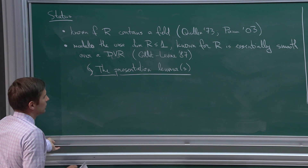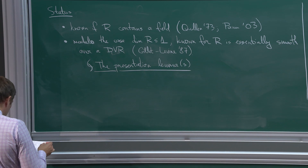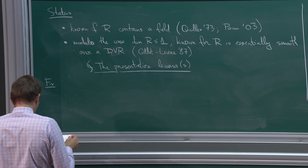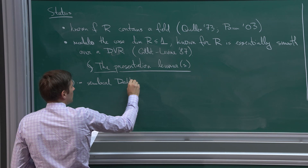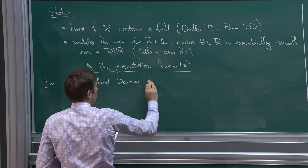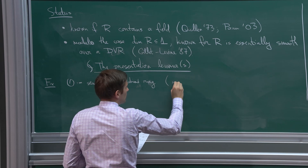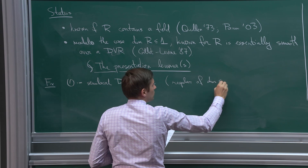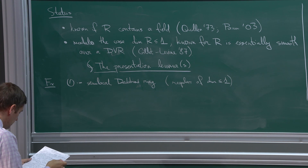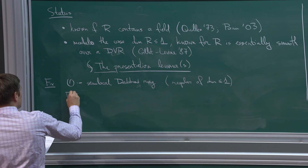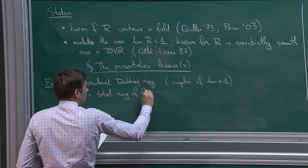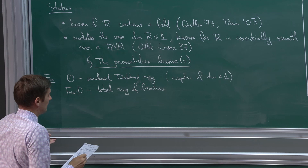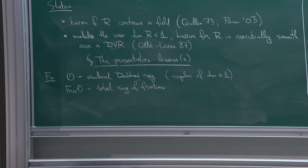Let me now state what these presentation lemmas are. I'll fix a semi-local Dedekind ring O simultaneously covering the field case and the mixed characteristic DVR case. This means O is a semi-local ring that is regular of dimension at most one — for instance, a field, a DVR, or a localization of Z at finitely many primes. FRAC(O) will be its total ring of fractions.